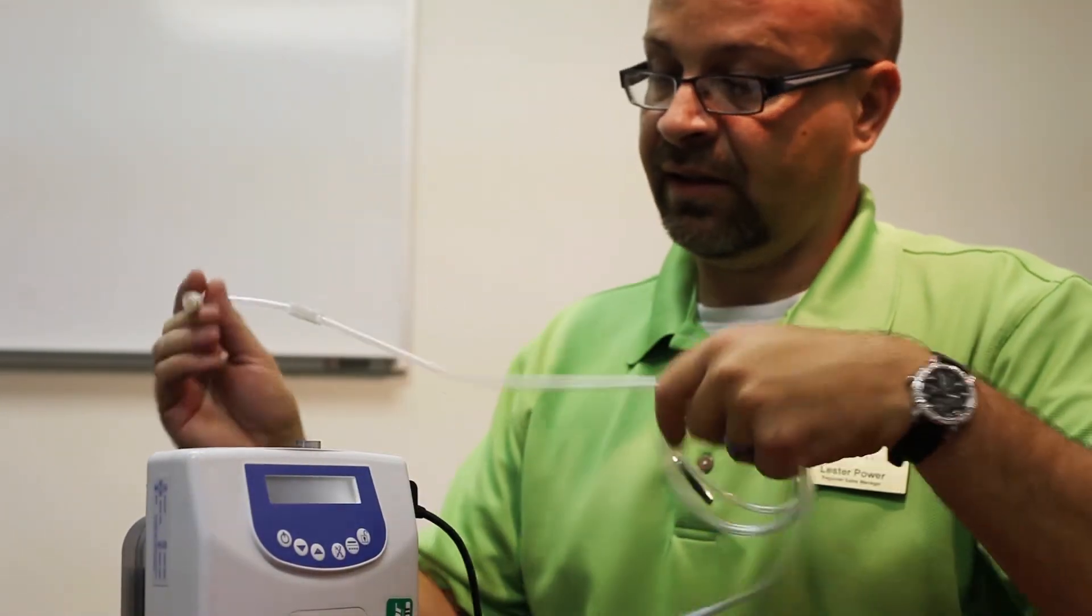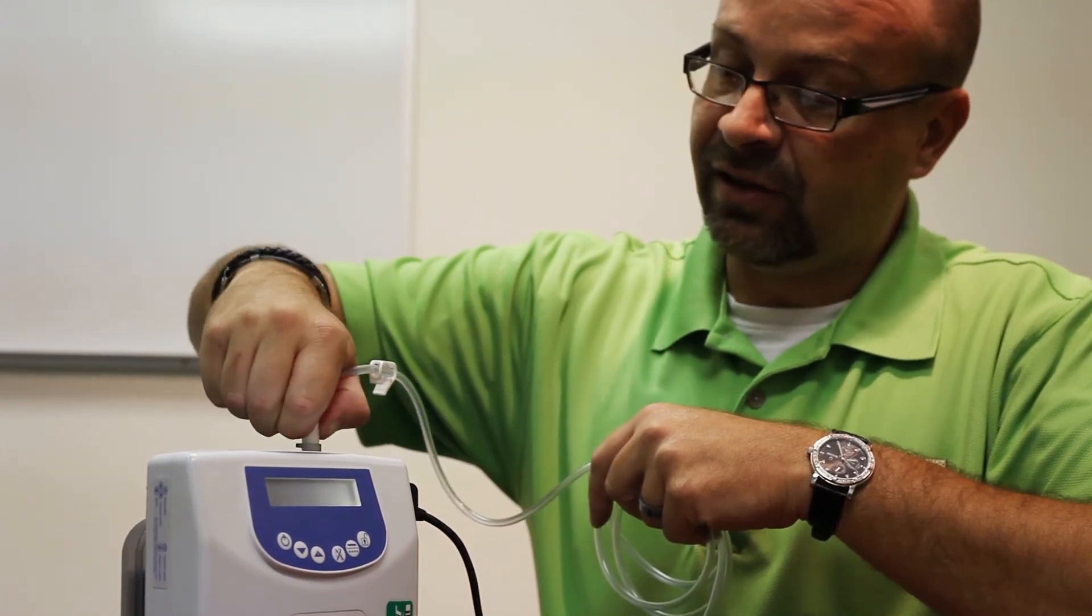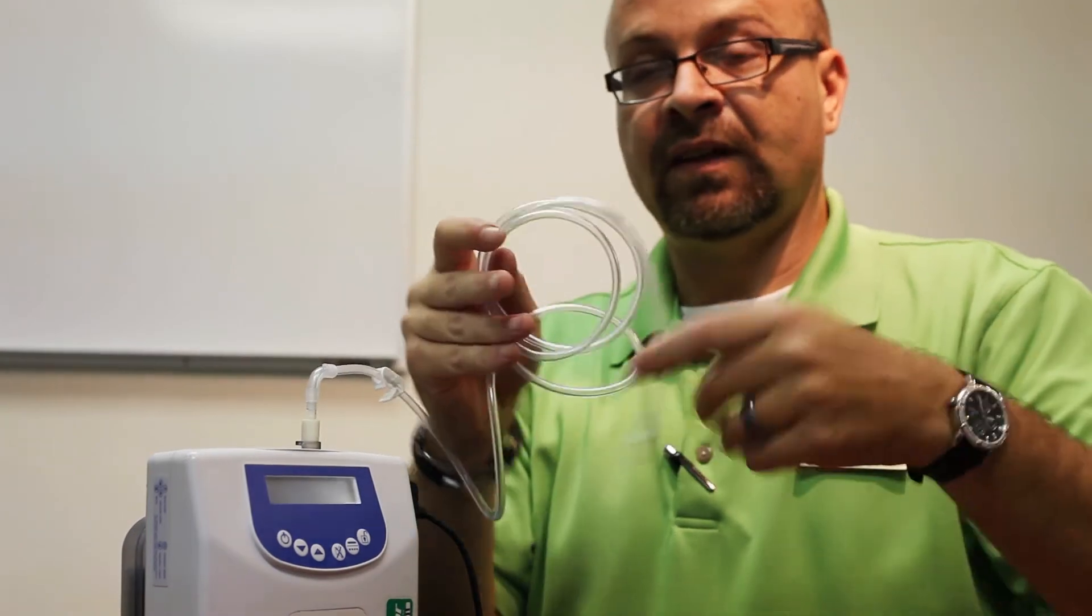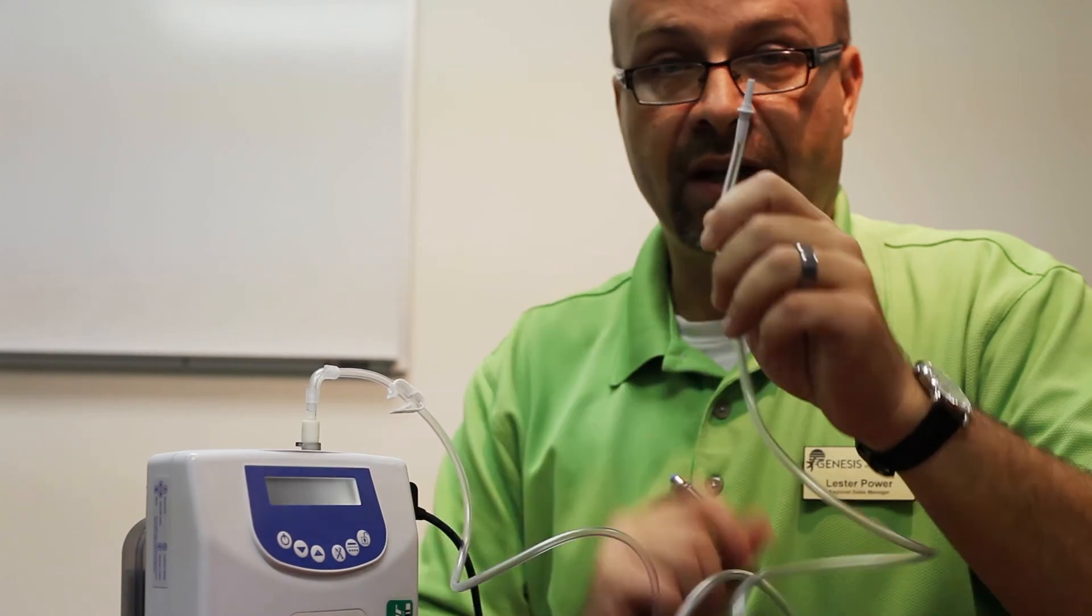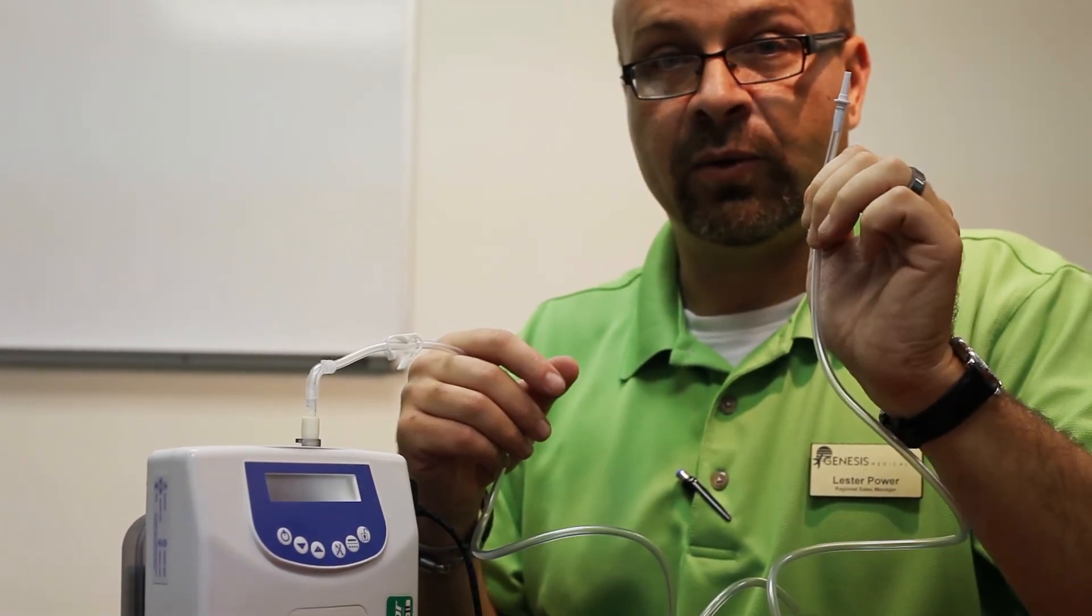Connection tubing. The placement simply goes down into the opening of the canister and twist. At the end of the tubing, we have our Christmas tree adapter. That simply is going to be where you plug in the tubing from the canister to the drain coming from the wound site.